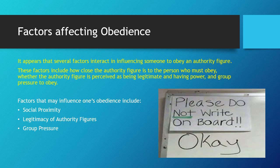There are several factors that interact to influence someone to obey an authority figure. These factors include how close the authority figure is to the person who must obey, whether the authority figure is perceived as legitimate and having power, and whether groups are pressured to obey. In Milgram's experiment, social proximity, legitimacy of authority figures, and group pressure all influenced obedience.